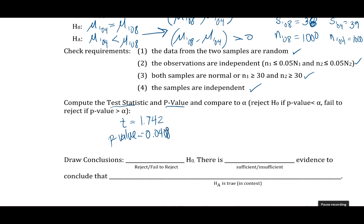And to draw conclusions here, notice that for our significance level, which was alpha is 0.1, our p-value is smaller than that. So we will reject the null hypothesis and find that we have sufficient evidence to conclude that the mean test score was higher in 2008.